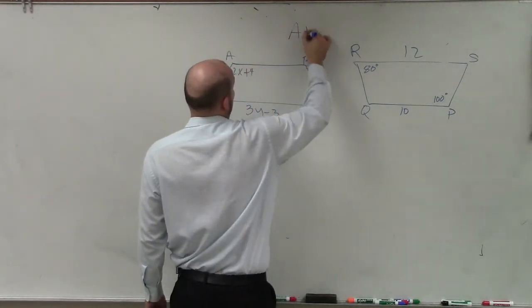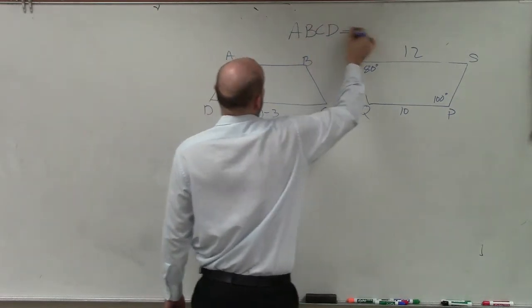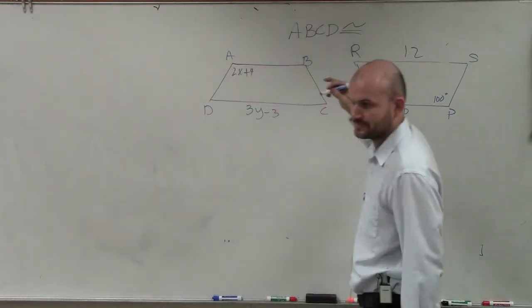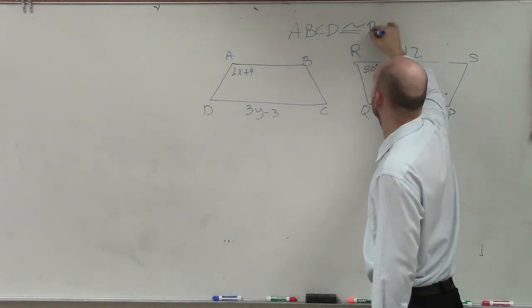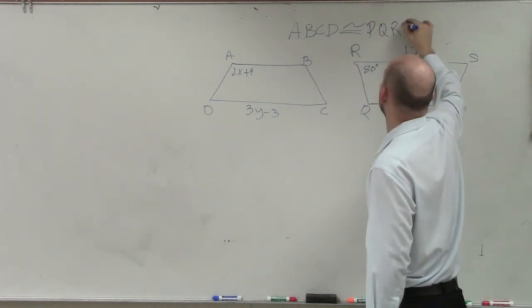So we have polygon A, B, C, D is congruent to what polygon? P, Q, R, S.